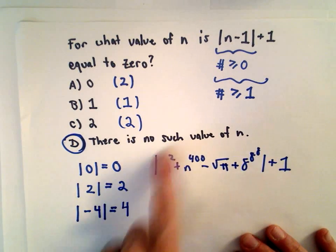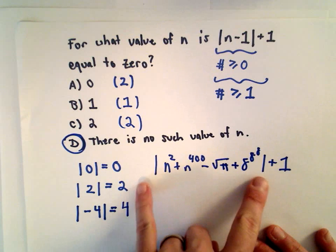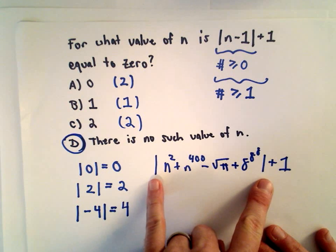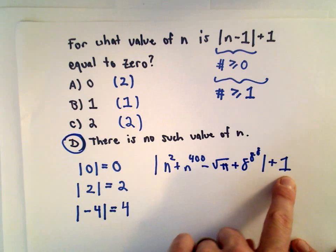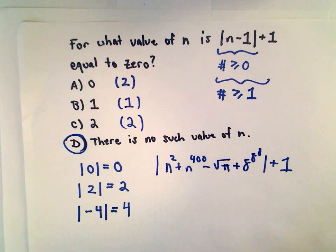There'll be no solution because once you simplify, no matter what you substitute in for n, the absolute value, you're going to get something that's 0 or larger. If you add 1 to that, it's going to give you something that's 1 or larger. So that's all there is to it, just making sure that you remember absolute value.